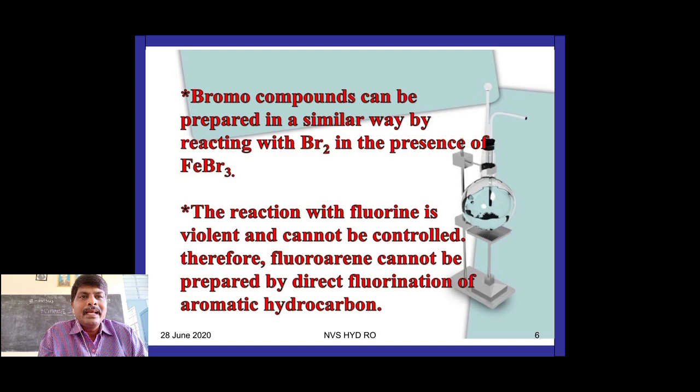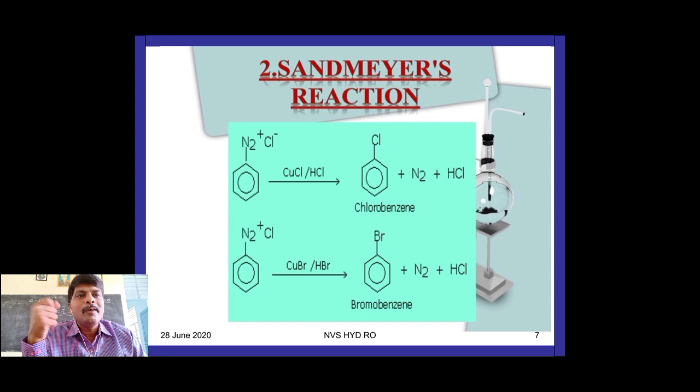For fluorobenzene: bromo compounds can be prepared similarly using bromine with FeBr3. However, the reaction of fluorine is violent and cannot be controlled, so fluorobenzene cannot be prepared by direct fluorination of an aromatic hydrocarbon. We have to follow another method — from benzene diazonium chloride.